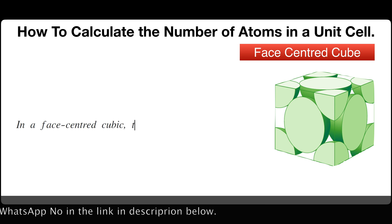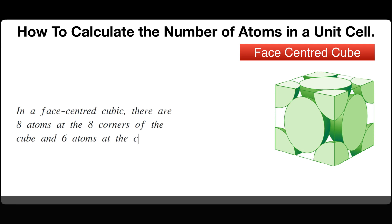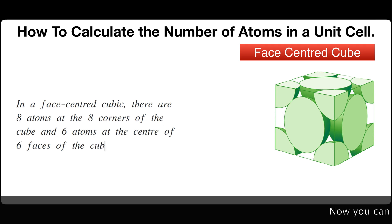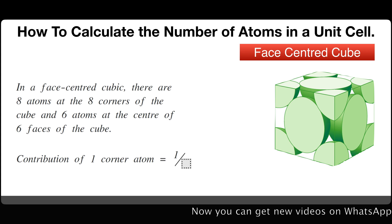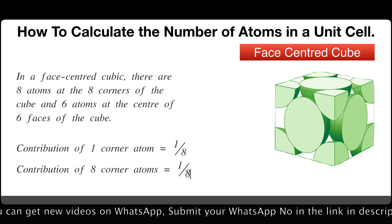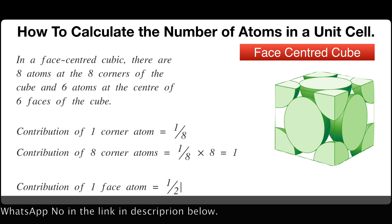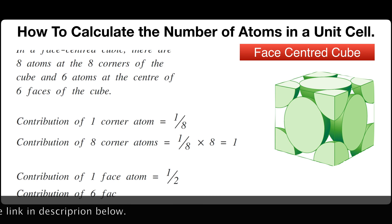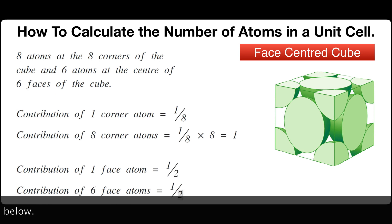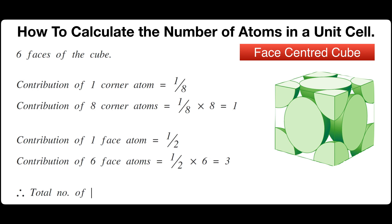In a face-centered cubic structure, there are eight atoms at the eight corners of the cube and six atoms at the center of the six faces of the cube. Therefore, the contribution of eight corner atoms equals one-eighth times eight, which equals one. Similarly, the contribution of one face atom equals one-half. And therefore, the contribution of six face atoms is one-half times six, which comes to three. Therefore, the total number of atoms in a unit cell of FCC structure equals one plus three, which equals four.